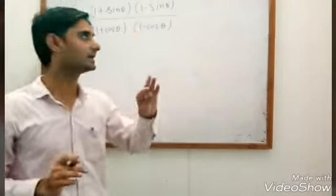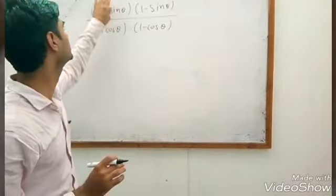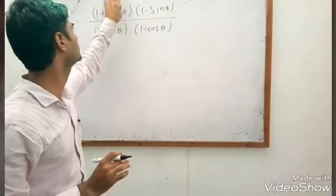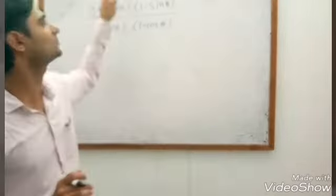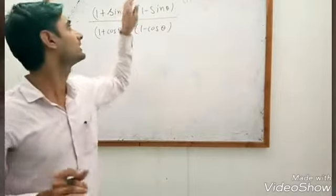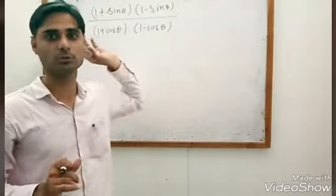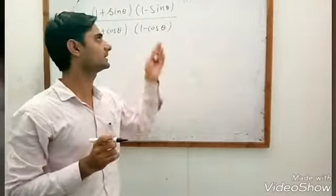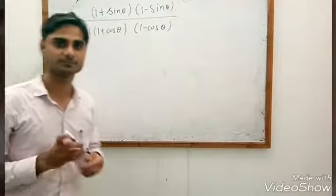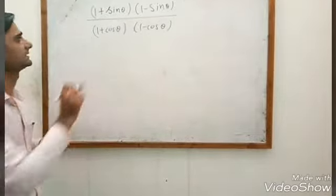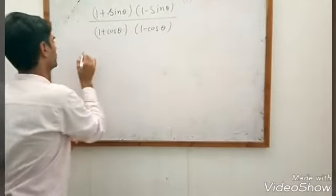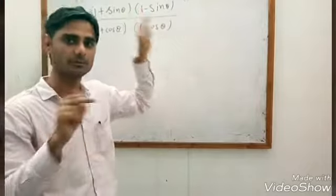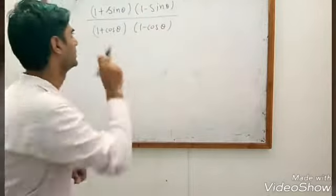Here we have two methods. One is we will put the value of cot θ directly. If cot θ is not given, we can find the value of sin θ, cos θ, and other trigonometric functions. But here, first we will simplify the expression, then we will put the value.